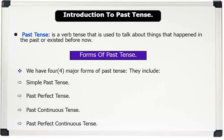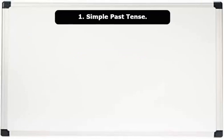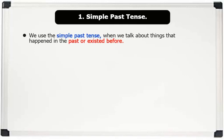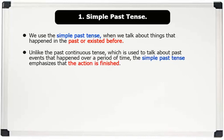Simple past tense. We use the simple past tense when we talk about things that happened in the past or existed before. Unlike the past continuous tense, which is used to talk about past events that happened over a period of time, the simple past tense emphasizes that the action is finished.